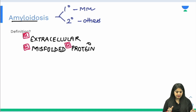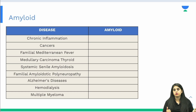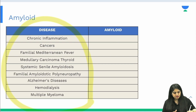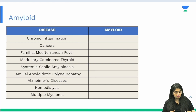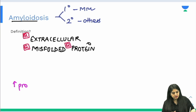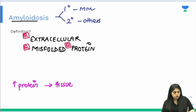There is an entire table of amyloidosis diseases to understand. In all of these diseases, some protein will increase — for example, in multiple myeloma immunoglobulins increase, in Alzheimer's disease beta plaques increase, in medullary carcinoma calcitonin increases. Whenever there's an increase in some protein in the blood, it gets deposited in the tissues in the form of amyloid — that is the core concept.